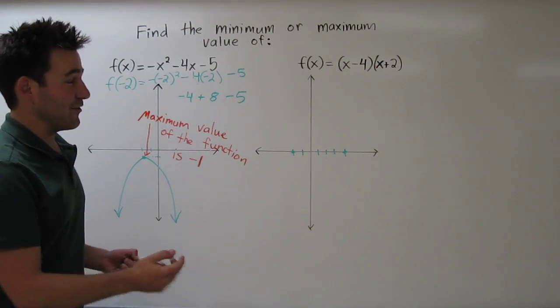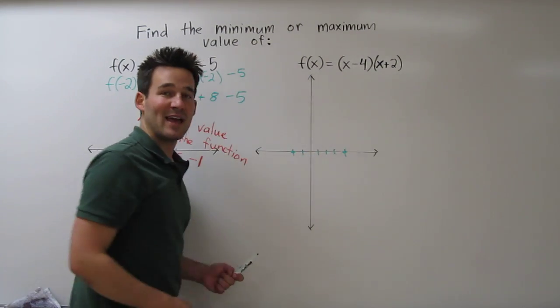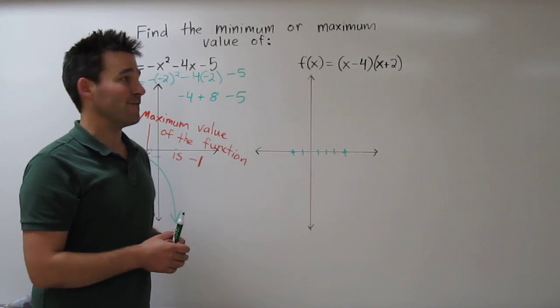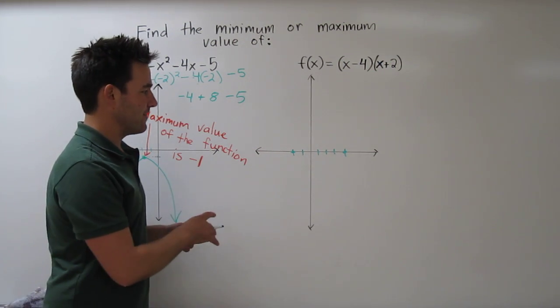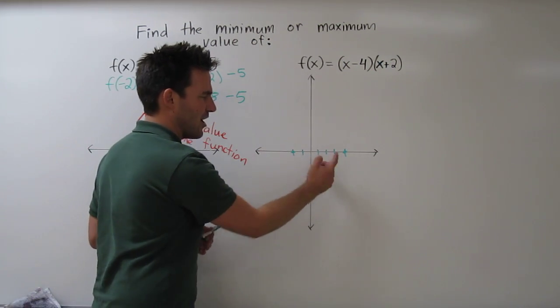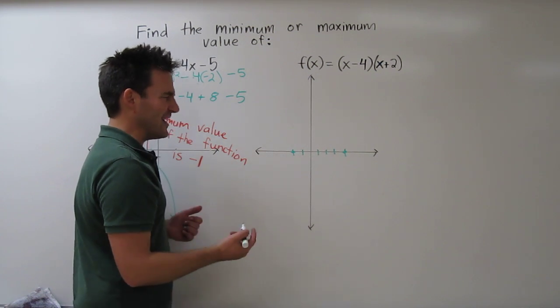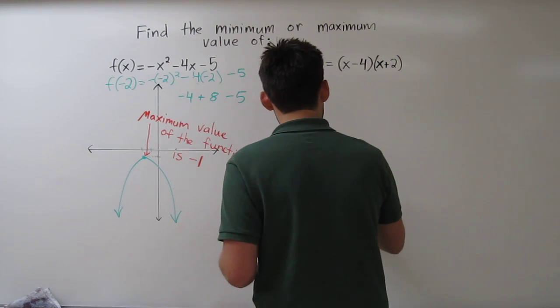And we also know that if we were to FOIL this out, we would have a positive coefficient for the x-squared term. So I know the parabola points up. Now, looking at where the intercepts are, and knowing it points up, I know this must have a shape like this.